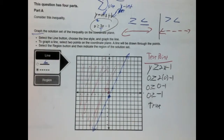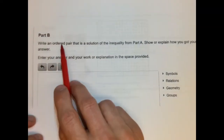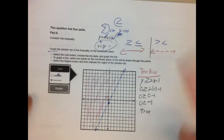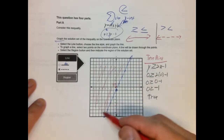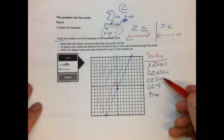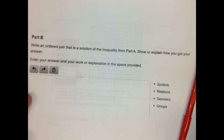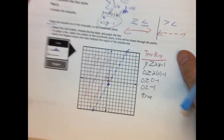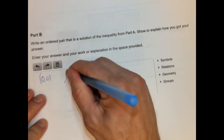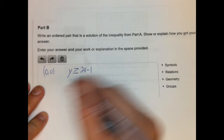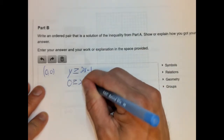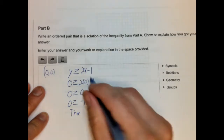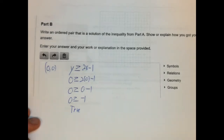That's part 1. Let's check out the second part: write an ordered pair that is a solution of the inequality from part A and show how you got your answer. If it's a solution, it's a point either on the line — because remember, it's inclusive — or anywhere in the shaded region. You could use your test point (0, 0). You write: y ≥ 2x − 1, plug in (0, 0): 0 ≥ 2(0) − 1 → 0 ≥ −1. That's a true statement. So (0, 0) is a solution.